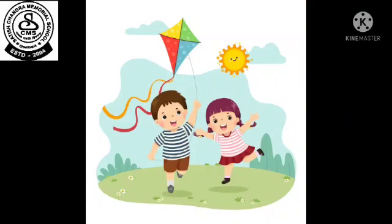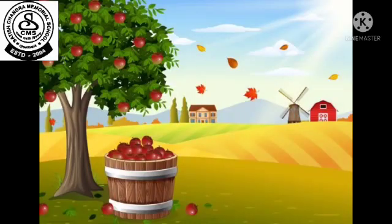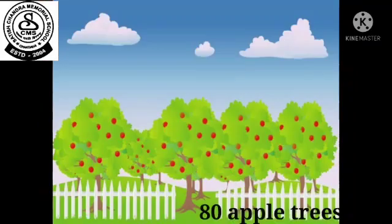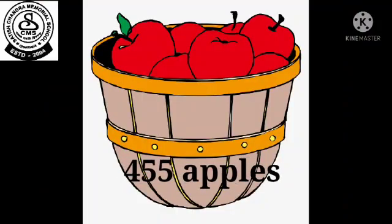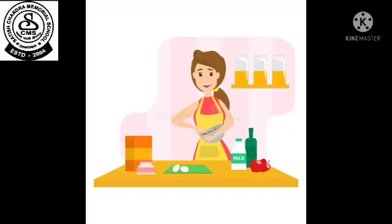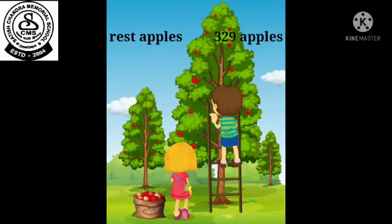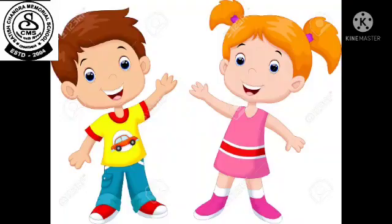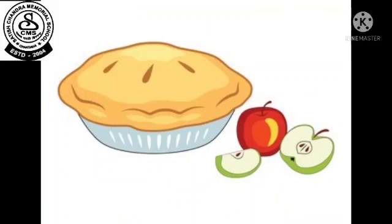Sonu is going for picking apples with her sister Pinky for their fruit shop. They are going to the apple orchard near their house. In that orchard, there are 80 apple trees. They need to pick 455 apples. Their mom is going to use some apples to make a big apple pie. At the orchard, Sonu picked 329 apples and Pinky picked the rest of the apples. They had a great day together.